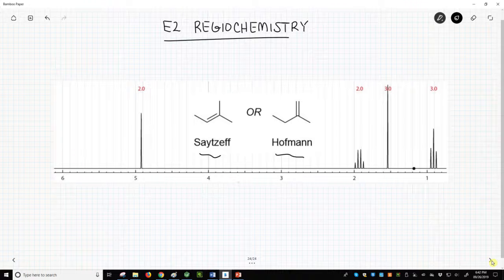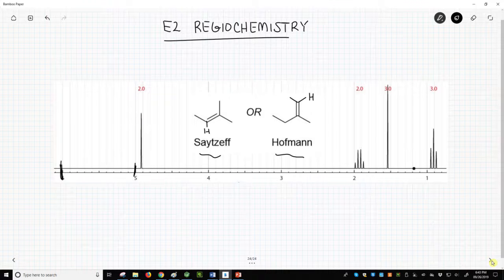What helps us most in this problem is integration. Alkene hydrogens appear normally in the 5-6 region. The Saytzeff product should have 1 alkene hydrogen. The Hofmann product should have 2.